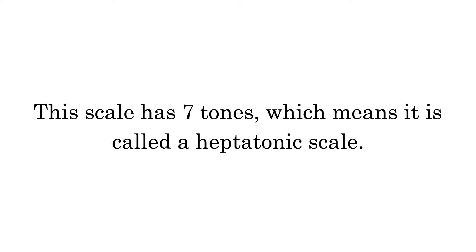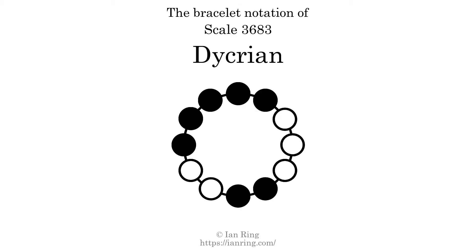This scale has 7 tones, which means it is called a heptatonic scale. This is a bracelet notation diagram of scale 3683. The shaded circles represent tones that appear in the scale, and they are read clockwise, starting at the top.